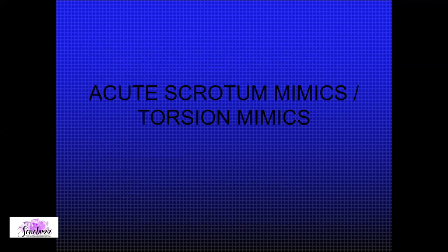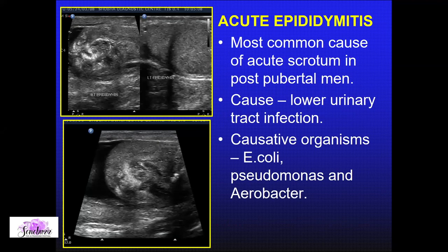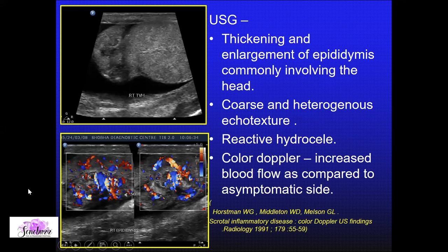Moving to epididymitis: most of the time there is an incidental history of underlying urinary tract infection or genitourinary infection. You see an echogenic inflamed epididymis typically at the upper pole of the testis; on color Doppler, increased vascularity compared with the contralateral side — unless otherwise, this is epididymitis. The epididymis is a cryptic site for infection, which can spread to the testis causing orchitis, and to the cord causing funiculitis. In practice you often see an overlapping picture of epididymitis, epididymo-orchitis, and funiculitis.